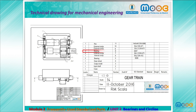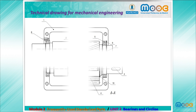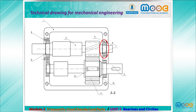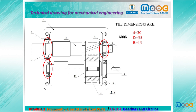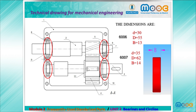Here we have the title block with the designation for the bearings: 6007 and 6006, which have standard dimensions. Bearing 6006 has inner diameter 30, outer diameter 55, and width 13. Bearing 6007 has inner diameter 35, outer diameter 62, and width 14.